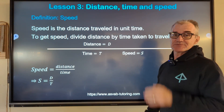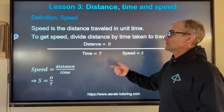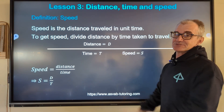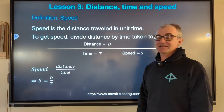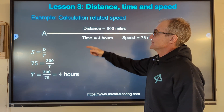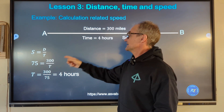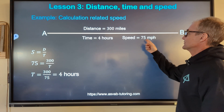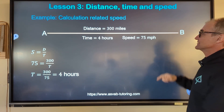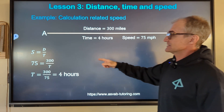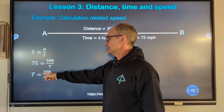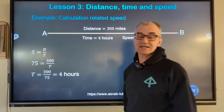Next we're going to look at distance problems — distance, time, and speed. Those are three separate variables. One divided by the other is a ratio, and that ratio equals speed. Speed is distance over time. These are really good problems to know — there are tons of them in all standardized tests. As an example, speed equals distance over time: take the distance and divide it by the time of four hours. 300 divided by four is 75 miles per hour. If I wanted to solve for time, I cross-multiply to get t by itself: 300 divided by 75 gives four hours.